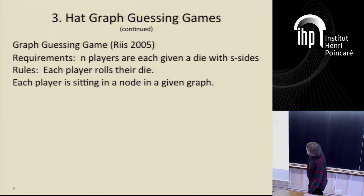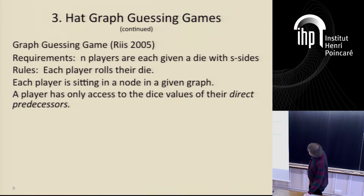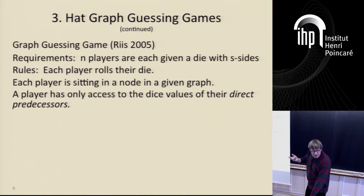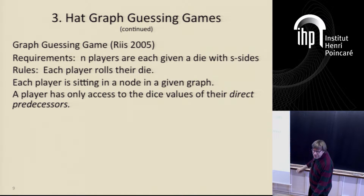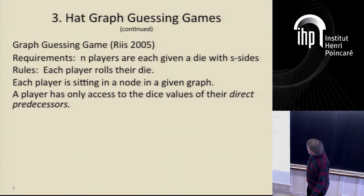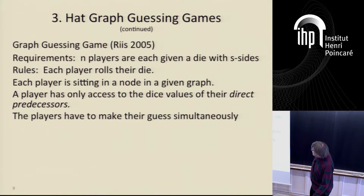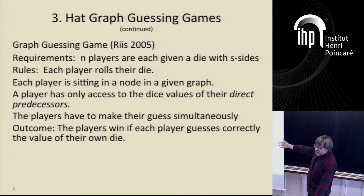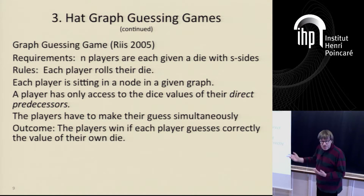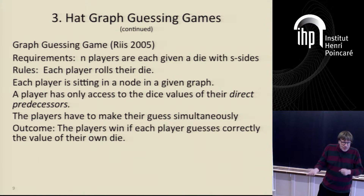This guessing number is going to play an important role in our theories. Some years later I started to ask myself what happens if they play this game on a directed graph in general. Instead of doing it on a complete graph, the players cannot see all the other hats — they can only see a subset. In this directed graph they can only see the hat colors of their direct predecessors.